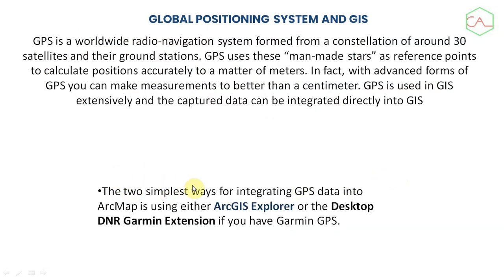Another topic is the global positioning system and GPS. GPS is a worldwide radio navigation system formed from different constellations of satellites and their ground stations. GPS uses these man-made satellites as reference points to calculate positions accurately to a matter of meters. Even differential GPS these days can give very accurate results, and the technology has advanced to the point where GPS can make measurements in centimeters. GPS is one of the most important tools used to capture location coordinates and integrate them directly into GIS.